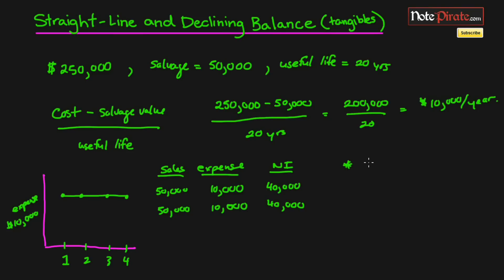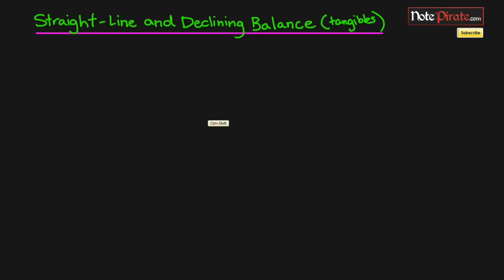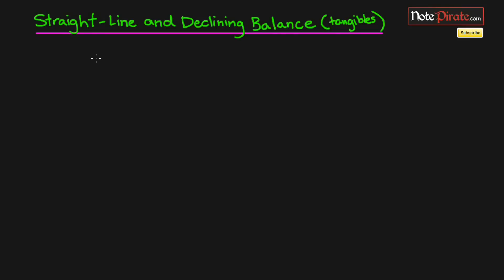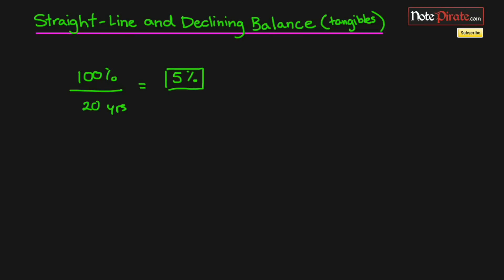The straight-line method is very simple and demonstrates a constant use of the asset over its useful life — we're not assuming more usage at the beginning or the end. That's actually what the declining balance method captures. For the declining balance method, you take 100% divided by the useful life: 100 divided by 20 years gives you a rate of 5%.